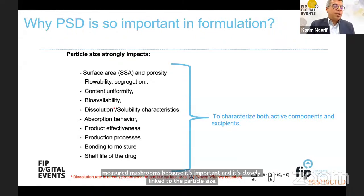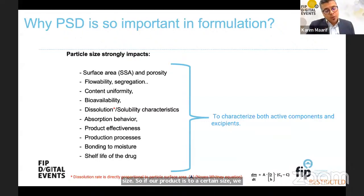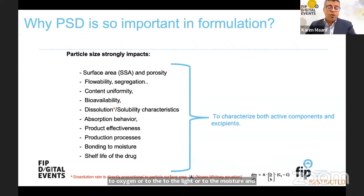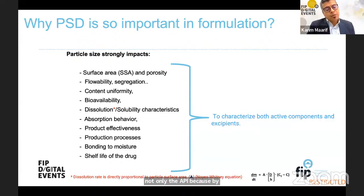The shelf life of a drug is also impacted by particle size. If our product is milled to a certain size, we may expose it to the environment and it will be more reactive to oxygen, light, or moisture — then stability becomes a really important concern for a formulator. These parameters also concern the excipient, not only the API, because bioavailability is also linked to the quality of the excipient.